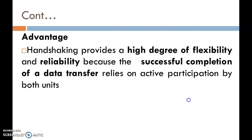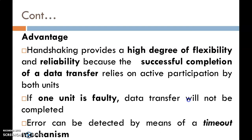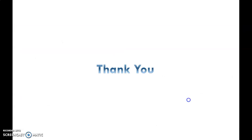The advantage of the Handshaking method is that it provides a high degree of flexibility and reliability, because both units know there has been a successful completion of data transfer. If one of the units — either the source or the destination — is faulty, the data transfer will not be completed and this is indicated by the signals. Errors can be detected by means of a timeout mechanism. I hope you enjoyed this video lecture session. Thank you.